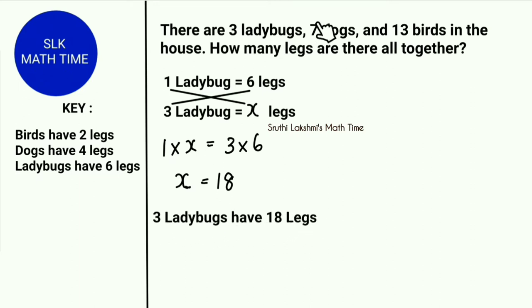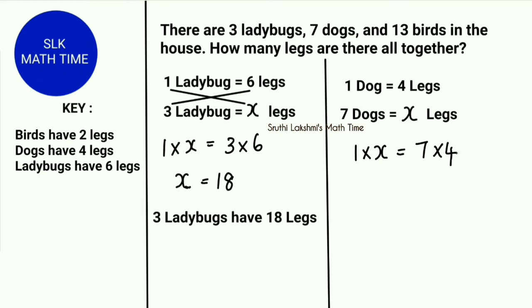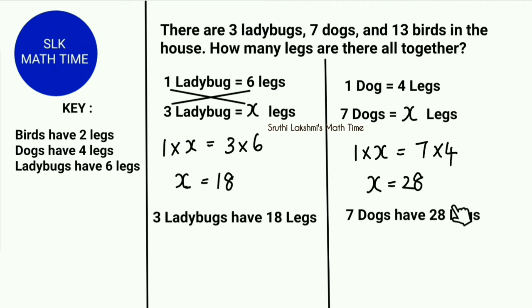Now let's solve for 7 dogs. Remember, 1 dog has 4 legs. They are asking how many legs 7 dogs have. 7 dogs equal x legs. So let's cross multiply: 1 into x, and 4 into 7. One equation has a variable while the other has numbers, so let's multiply the equation with the numbers. 7 into 4 is 28, so x must equal 28. So 7 dogs have 28 legs.